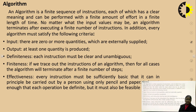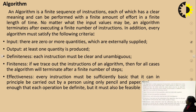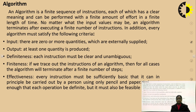Third one is definiteness. Definiteness means each instruction is clear and unambiguous — that means no ambiguity exists in any instruction. Then fourth is finiteness. Finiteness means the instructions must be in a finite number of steps.